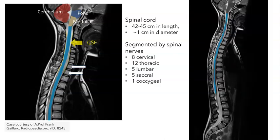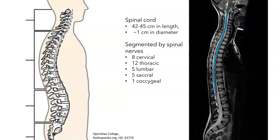Humans have a total of 31 spinal nerves: 8 cervical, 12 thoracic, 5 lumbar, 5 sacral, and 1 coccygeal. Students in human anatomy often use the mnemonic that we have breakfast at 8 o'clock, lunch at 12 o'clock, and an early dinner at 5, to remember the number of spinal nerves. There is a relationship between the spinal nerves and the vertebrae, but there are also some exceptions worth discussing.